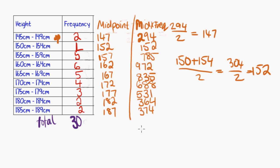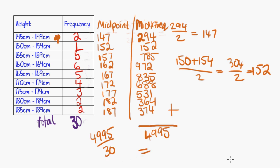Now that those products are completed, I add them all up, which gives 4995. The last step is to divide 4995 by 30, which is the total frequency, giving 166.5. And that's the mean of this frequency table. Because we know these are centimetres, the mean is 166.5 centimetres. You should always add your units.